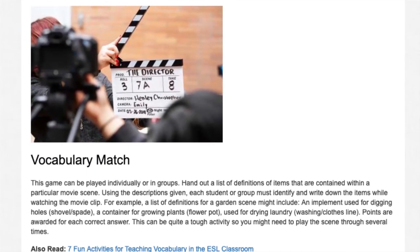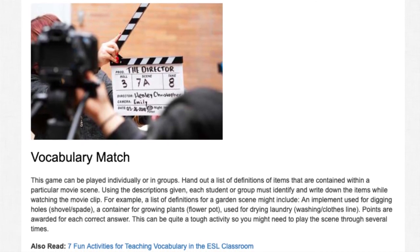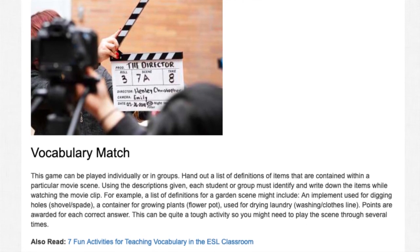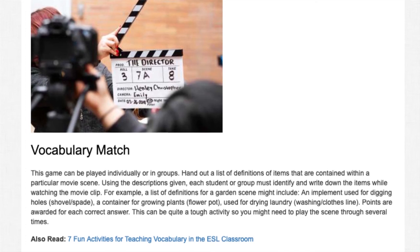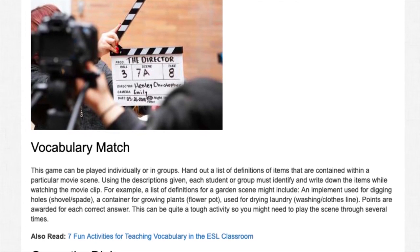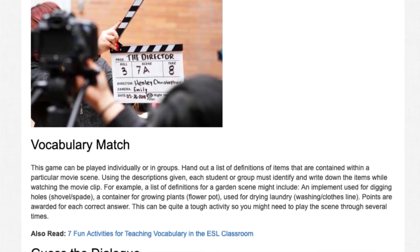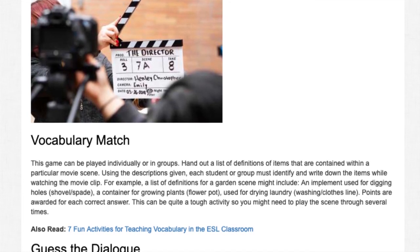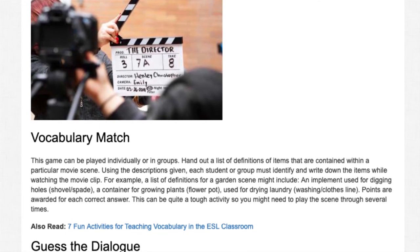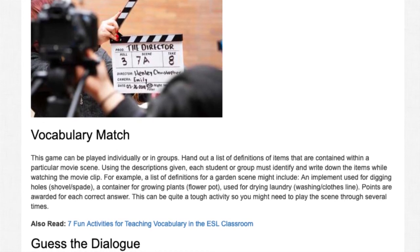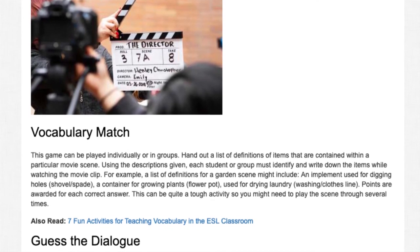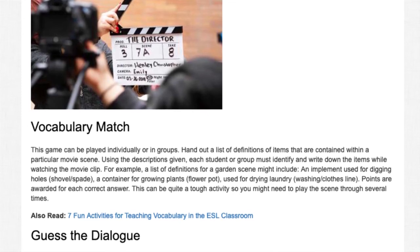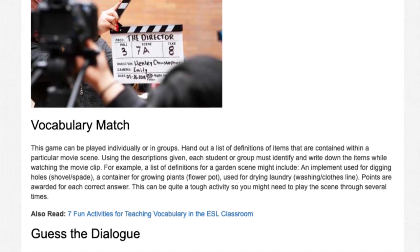Vocabulary Match. This game can be played individually or in groups. Hand out a list of definitions of items contained within a particular movie scene. Each student or group must identify and write down the items while watching the movie clip. For example, a list of definitions for a garden scene might include 'an implement used for digging holes' (shovel/spade), 'a container for growing plants' (flower pot), or 'used for drying laundry' (washing clothes line). Points are awarded for each correct answer. This can be a tough activity, so you might need to play the scene through several times.